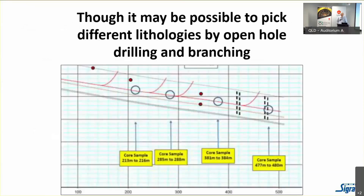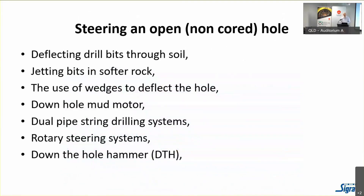It's also possible to pick different lithologies by open-hole drilling and branching. In coal mining, people drill in a coal seam, core up to pick up the roof and floor. If we're going to drill an open — what I call a non-cored — hole, the options range from deflecting bits for drilling through soil, similar to what people use for putting in services along roadways, to jetting bits in softer rock, which is an old oil field technique.